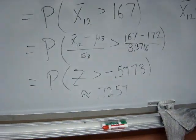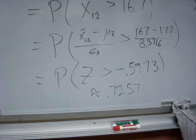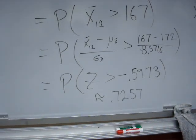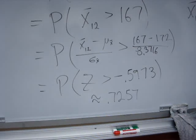So 0.7257. So that's the chances that if you just randomly chose 12 men, that they would be more than 2,004 pounds. If you wanted to use StatCrunch for this.